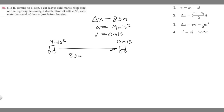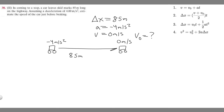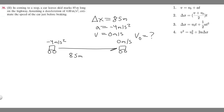The problem asks for the speed of the car just before braking, which is the initial velocity v-sub-zero. Looking at the kinematic equations, equations one through three all include time, which we aren't given, so we won't use those. Equation four contains v, v-sub-zero, a, and delta x — exactly what we have — so we'll use that one.